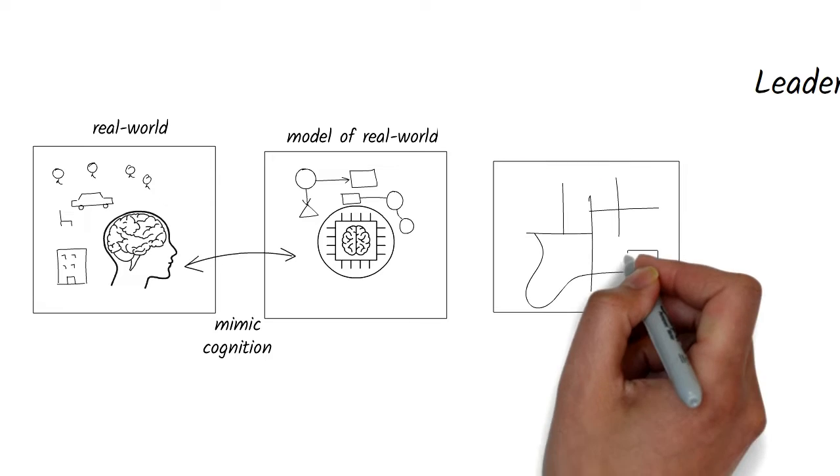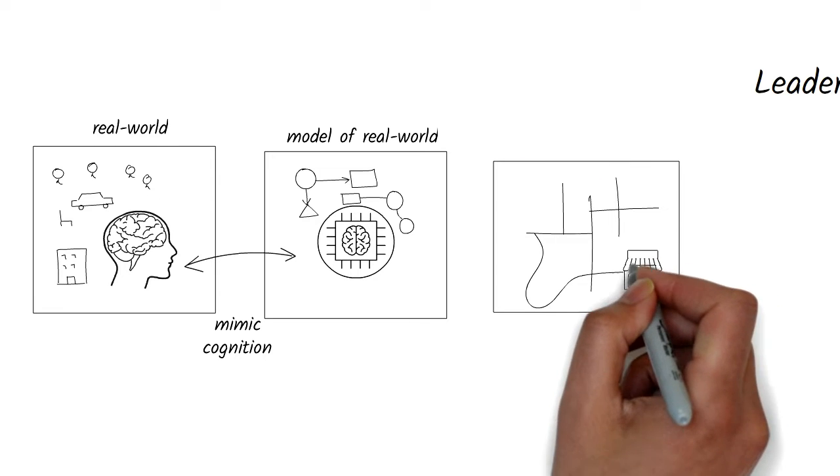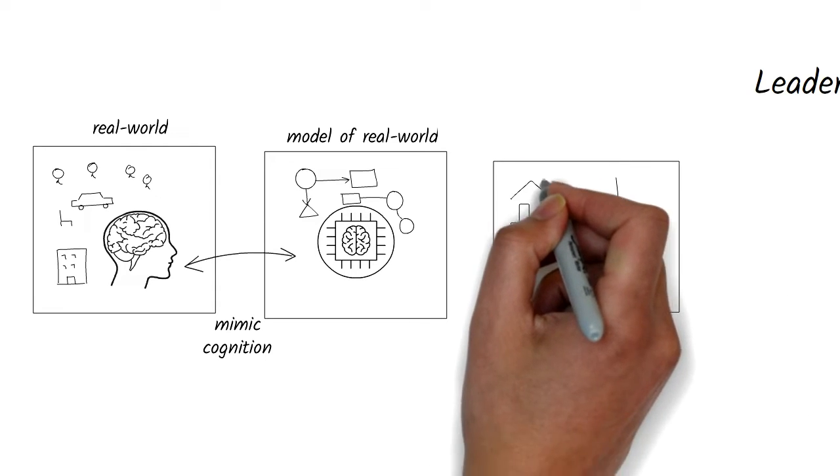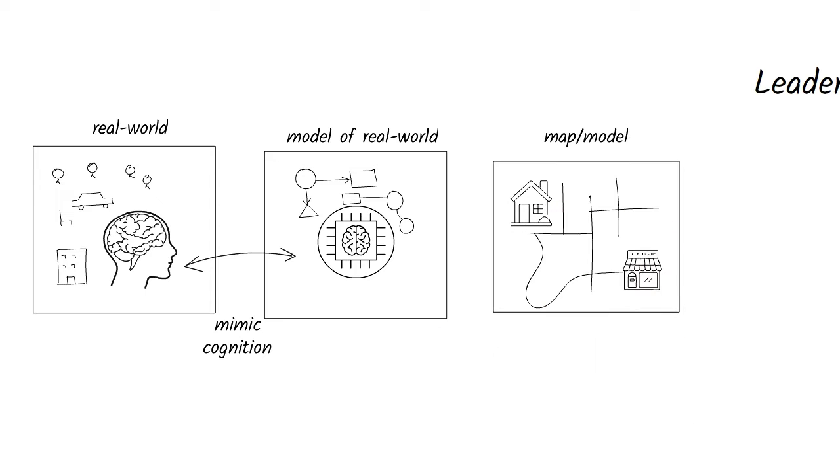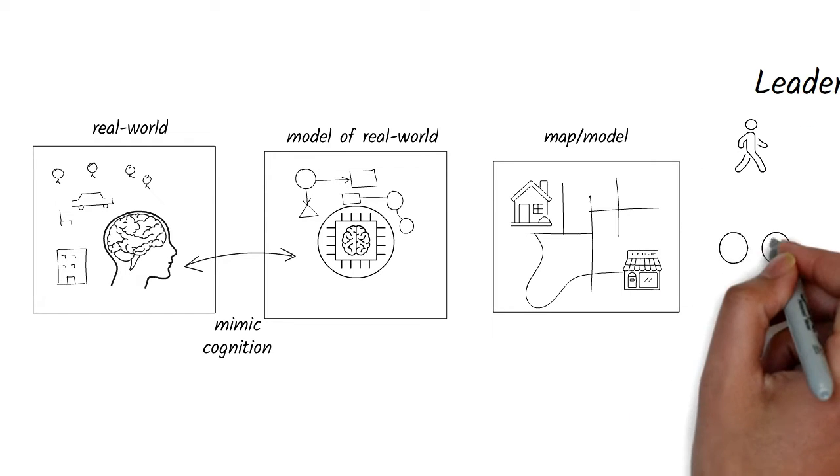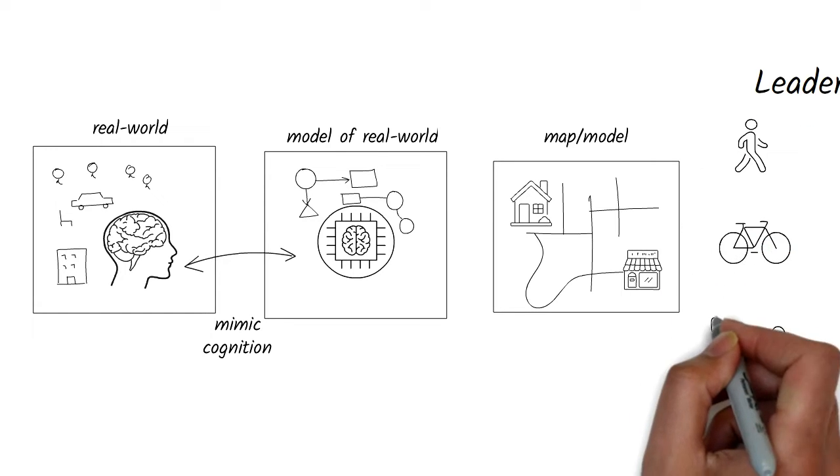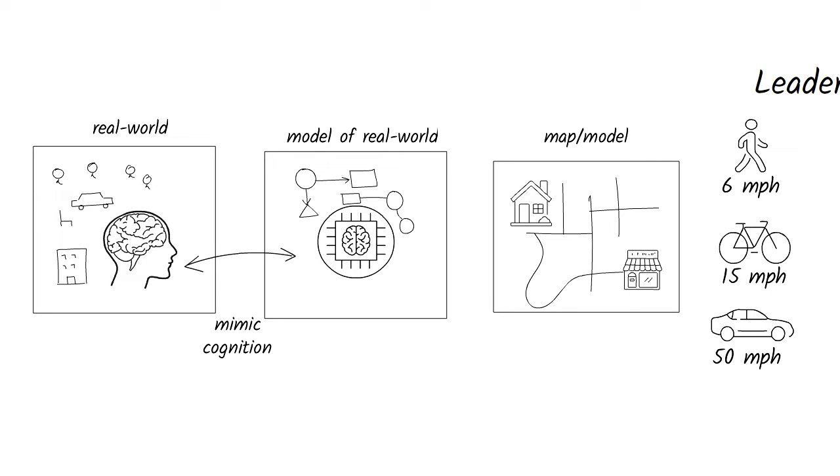For example, say you represent the following in a computer: a map of your town that includes the roads, your house on the map, and a restaurant where your friends are meeting. You also represent transportation modes like walking, cycling, and driving, and you know the average speed of these modes.